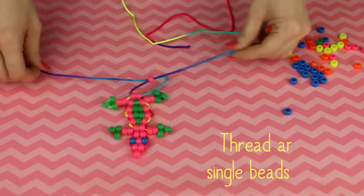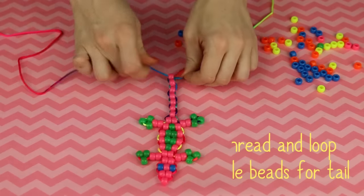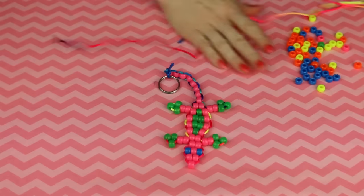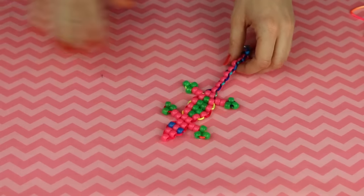And then get to work on the tail, which is just a bunch of single beads. Grab your key ring, tie it to the end. I don't really have a technique for that, I just kind of tied it. And there you go, lizard keychain.